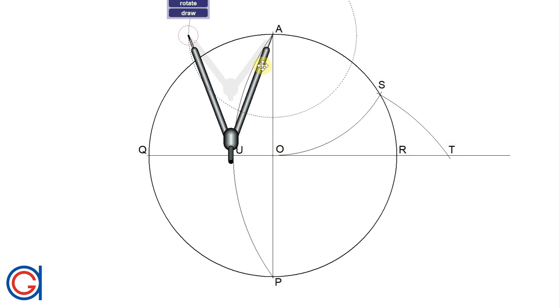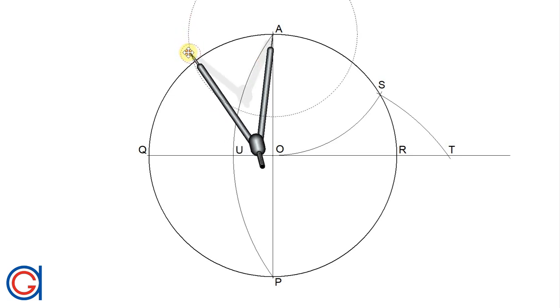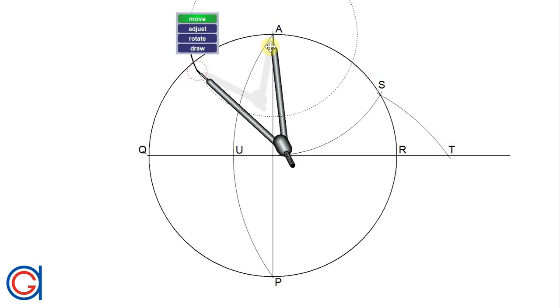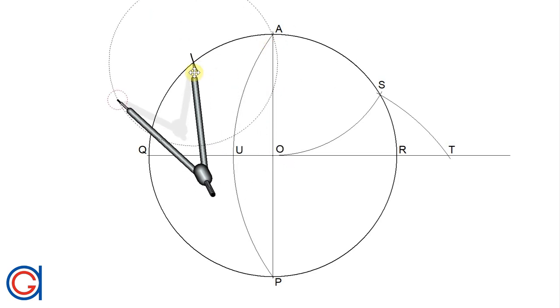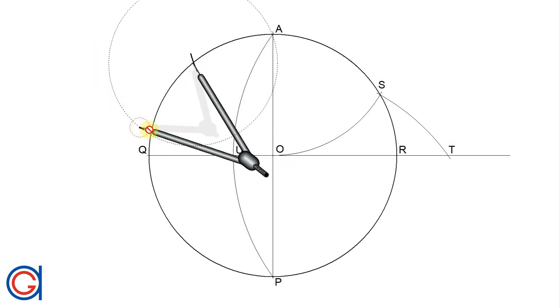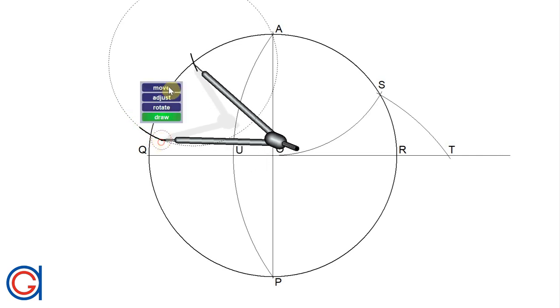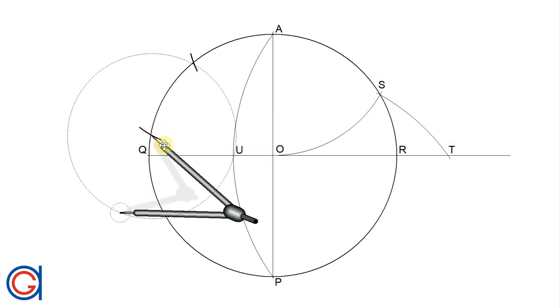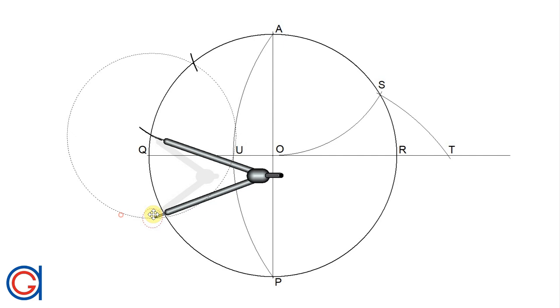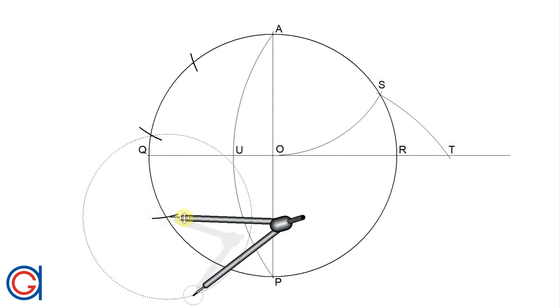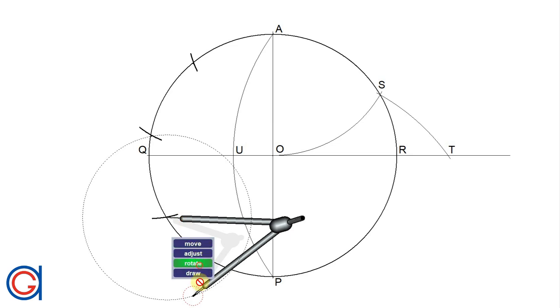So firstly setting our compass on point A with the radius QU, we scribe our first division of our nine divisions as can be seen here. And now setting the compass on the previous arc we scribe our second arc. And we continue this process on the left side of the circle as seen here.